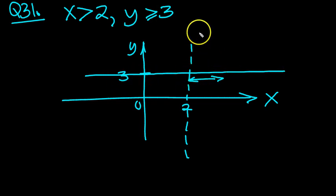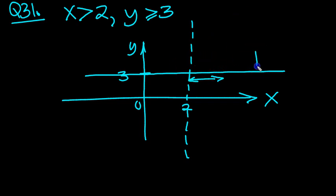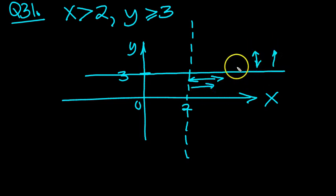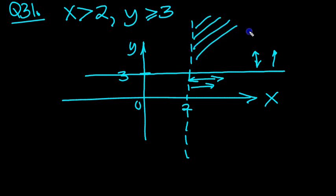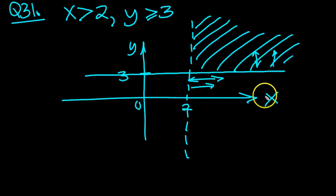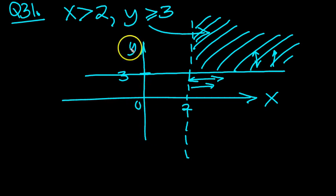So for both of these inequalities to be satisfied, they have to lie to the right of this line, and bigger than or equal to 3, they must lie above there. So to the right of here and above there would mean this region here. Let me shade it to denote that to the reader. That's the region in question, so I'll put a little arrow. And that's the region satisfied by these inequalities.